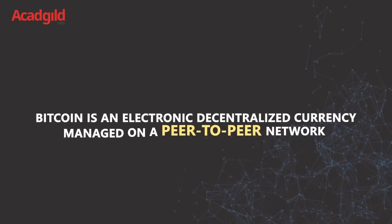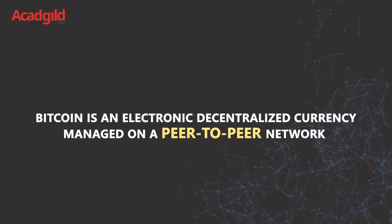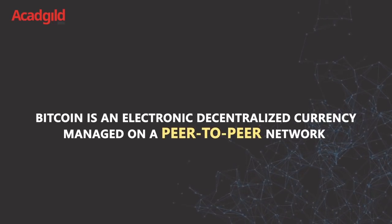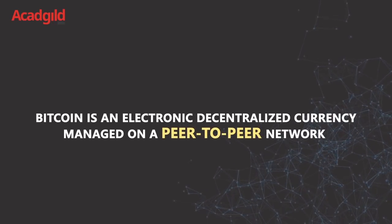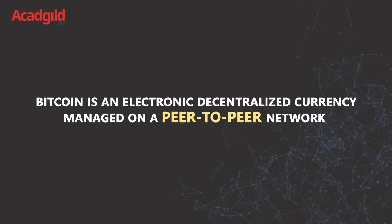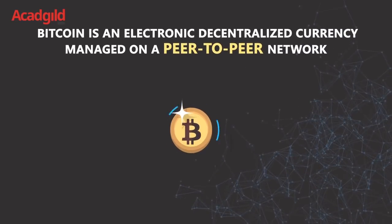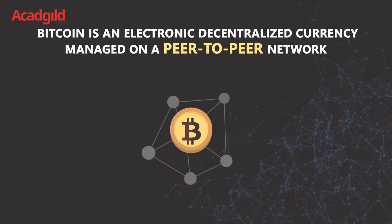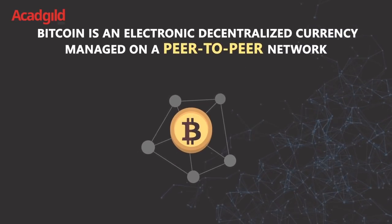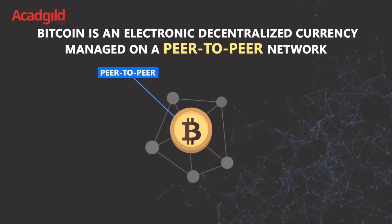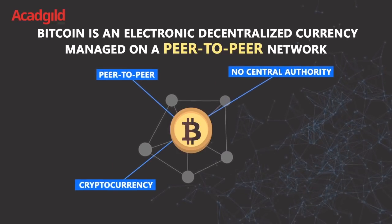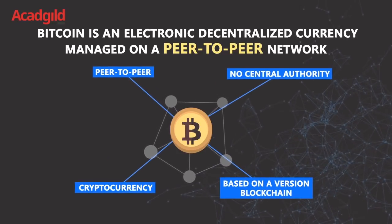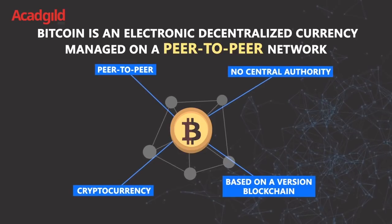Bitcoin is a decentralized digital currency, also known as cryptocurrency, with a system working without a central bank or a single administrator, thus making it essentially the first official implementation of all the four key principles of blockchain together.